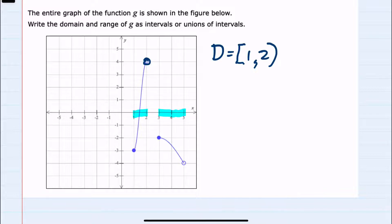So the curved bracket and then a union with our next piece here which starts at 3 and again is inclusive because it's a solid dot, from 3 to 5. And since the 5 is open we would again use the curved parentheses. So we've determined the domain.